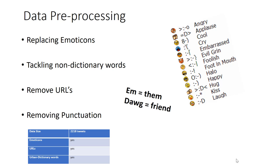We will also replace non-dictionary words like 'em' with 'them.' We will also remove the URLs which users share while sharing their tweets because those URLs don't give any sentiment value. We will also remove the punctuation signs because punctuation signs do not reflect any sentiment as well.